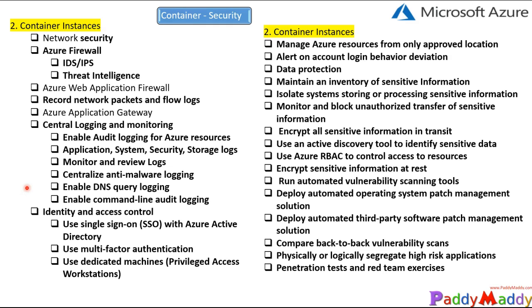Run automated vulnerability scanning tools so you know what vulnerabilities exist — for example, every 90 days you can run automated scans to discover any vulnerabilities. Also use Microsoft's patch management for the operating system as well as third-party patch management solutions available in the marketplace for third-party software. Compare back-to-back vulnerability scan reports — for example, scan every 60 or 90 days as per your process, and compare the previous report with the current scan report. If any deviations are found, fix them.